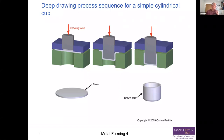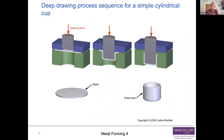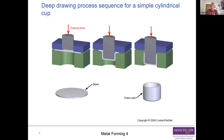Here's the deep drawing sequence for a simple cylindrical cup. You start out with a nice round blank, put it on top of the die (which is green), clamp it with the blank holder (which is blue), and down comes the punch — gradually pushing it down into the die. In this case, the whole blank is pushed down into the die and you end up with a completed drawn part: a simple cylindrical cup. All the material has flowed radially inward between the blank holder and die, then down between the punch and die.